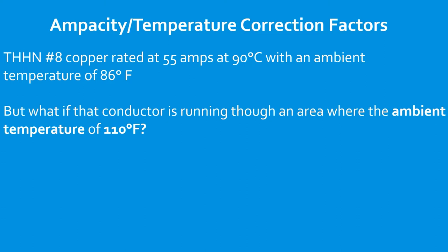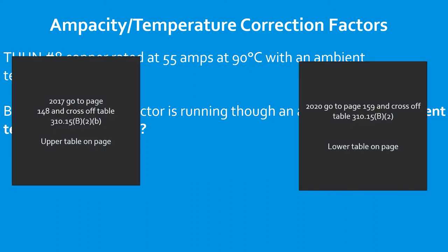What if that conductor is running through an area where the ambient temperature is 110°F? The codebook has made provisions and given us multipliers — think of them just like demand factors. Before we get started, if you're in the 2017 codebook, go to page 148 and cross off Table 310.15(B)(2)(b) — the larger upper table on that page. If you're in the 2020, go to page 159 and cross off Table 310.15(B)(2) — the lower table on that page. That table looks identical to the one we need, but we never use it.